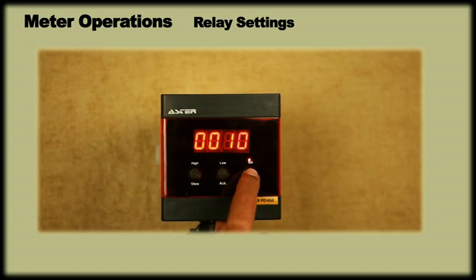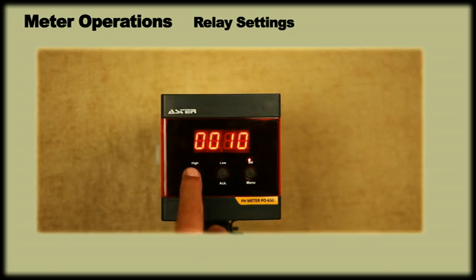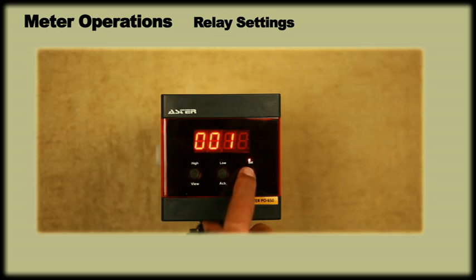On pressing menu, it will show a previously set hysteresis value. Using ACK key and view keys, we can set the required hysteresis value. Let us set hysteresis value at 10% and press menu to enter.